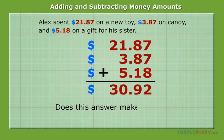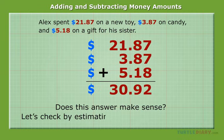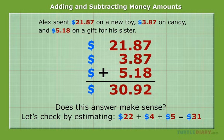Does this answer make sense? Let's check by estimating. $22 plus $4 plus $5 equals $31. And our answer is very close to this, so it is reasonable.